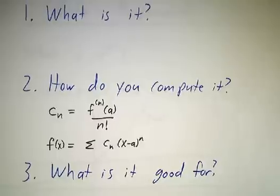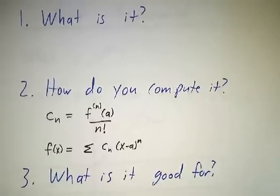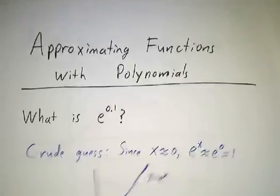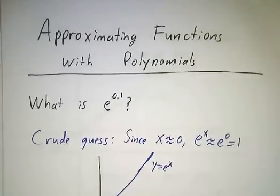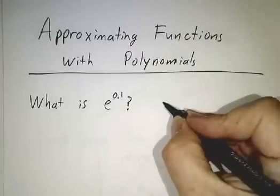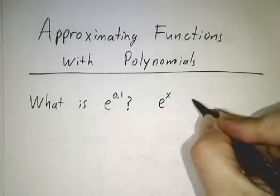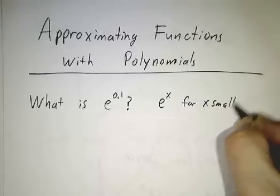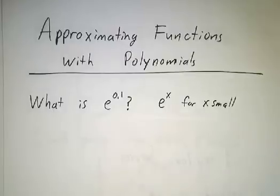In this video, we're going to talk about what it is and what it's good for. So the main thing that it's good for is approximating a function with a polynomial. For example, suppose that somebody asks you, what is e to the 0.1? That's really saying, how does e to the x behave for small values of x? 0.1 is a pretty small number.